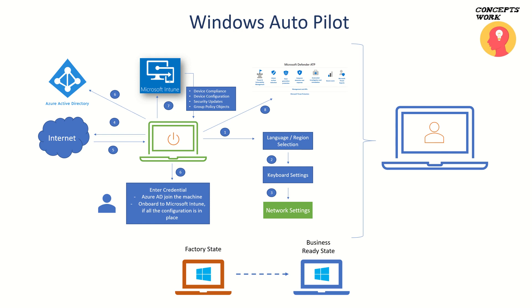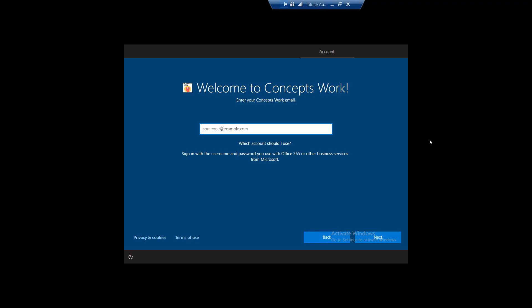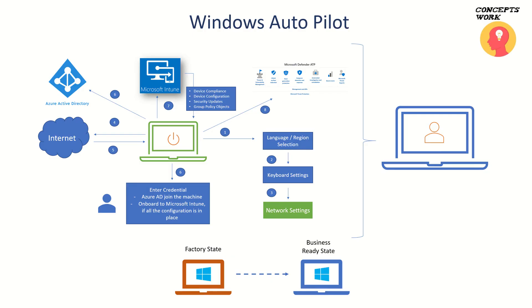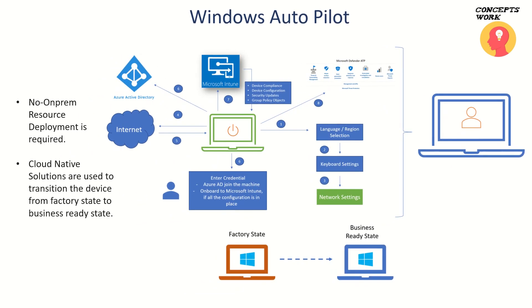Once the entire process is completed, you can hand over the machine to the respective users, who can use their Azure AD sign-in. Any machine onboarded with Autopilot will look something like this: here is a machine I've onboarded to Windows Autopilot and restarted. It has a valid Autopilot profile, and the user will be prompted to enter their corporate credentials — and from there, the entire process is automated.